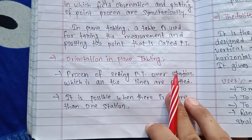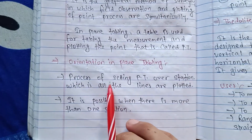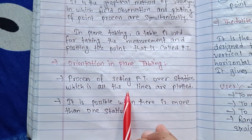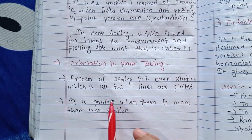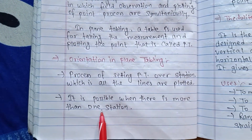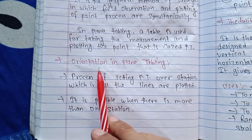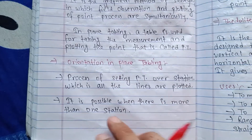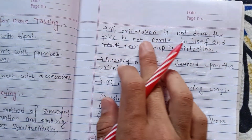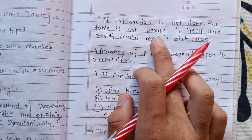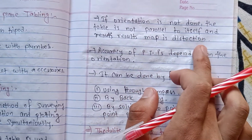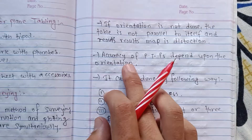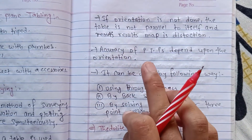Orientation of plane tabling is the process of setting the plane table over a station such that all plotted lines are parallel to themselves. This is required when there is more than one station. If orientation is not done, the table is not parallel to itself and the map results may be inaccurate. The accuracy of plane table surveying depends upon the orientation.